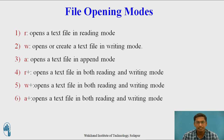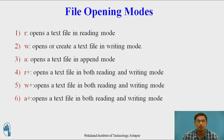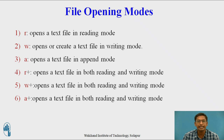There are six basic file opening modes used in C. The first ones are r, w, a, r+, w+, and a+, which are related to text files. Similarly, six other modes are available which are related to binary files. r is a text file used for reading mode. w opens or creates a text file in writing mode. a opens a text file in append mode. r+ opens a text file in both reading and writing mode. w+ opens a text file in reading and writing mode. a+ opens a text file in reading and writing mode. We will now consider each of these file opening modes in detail.